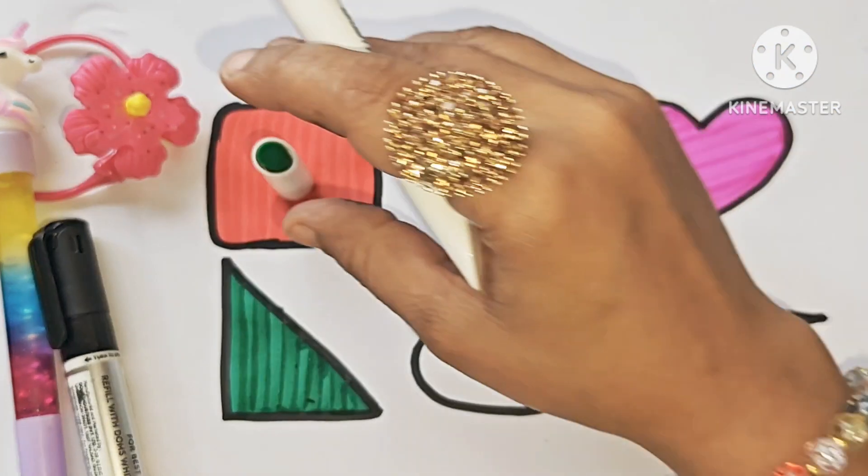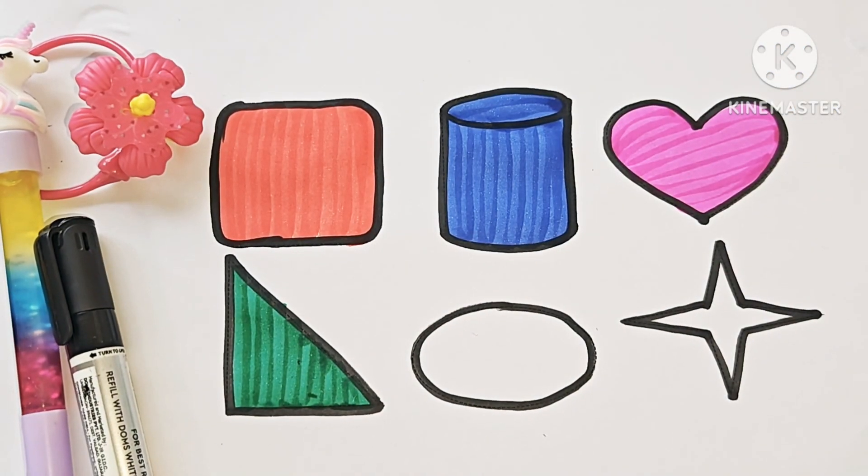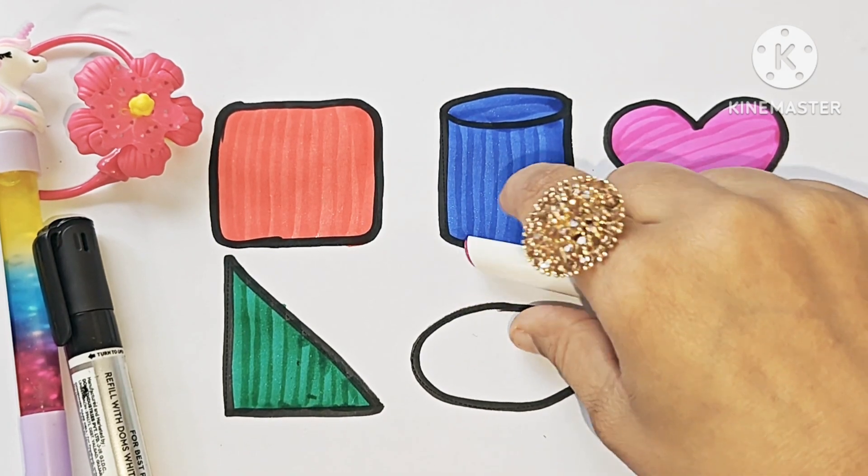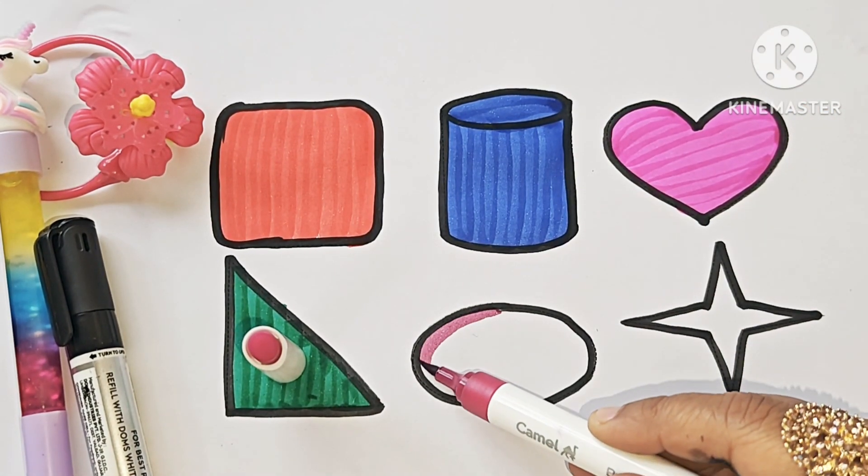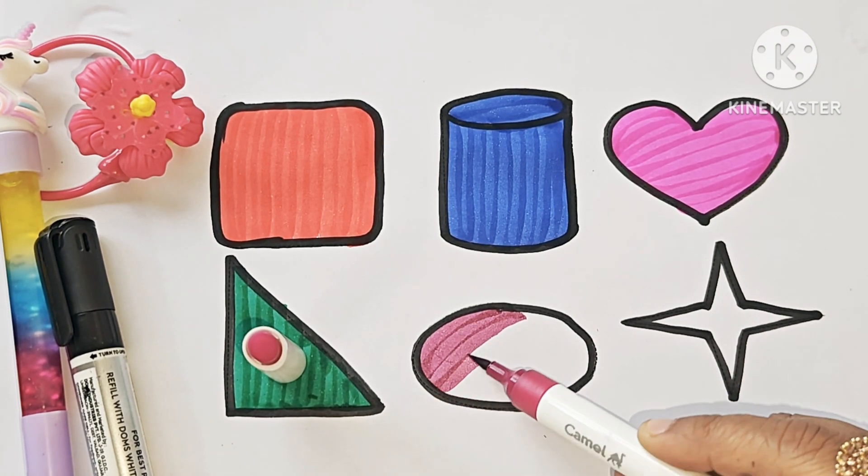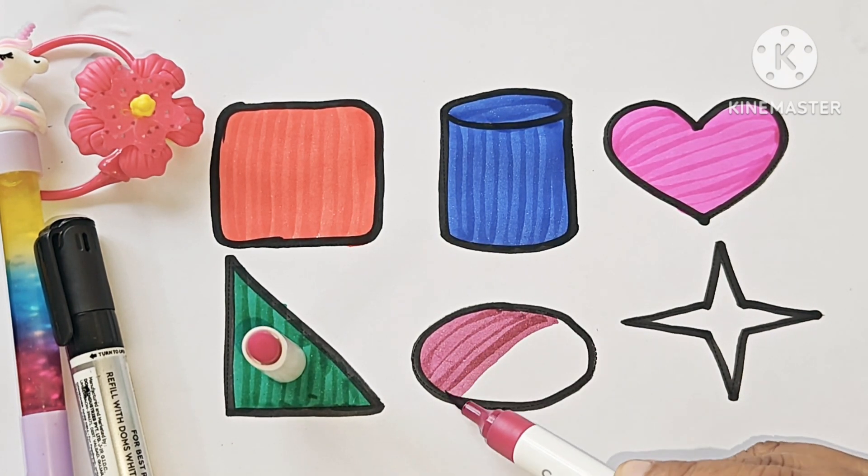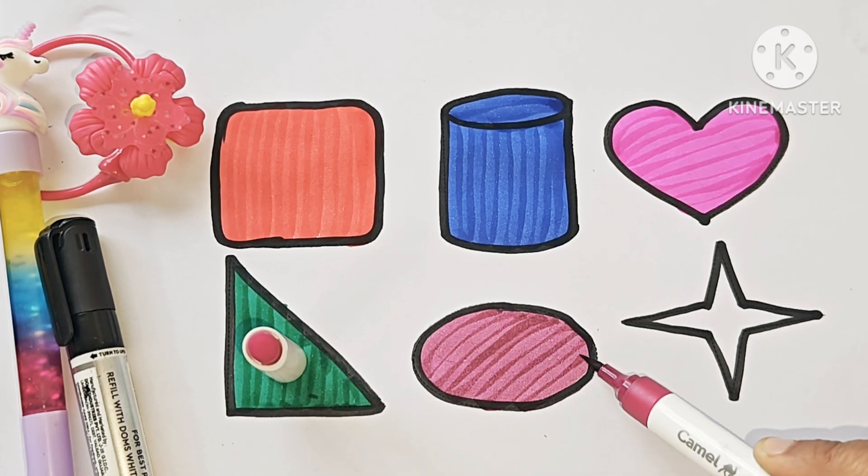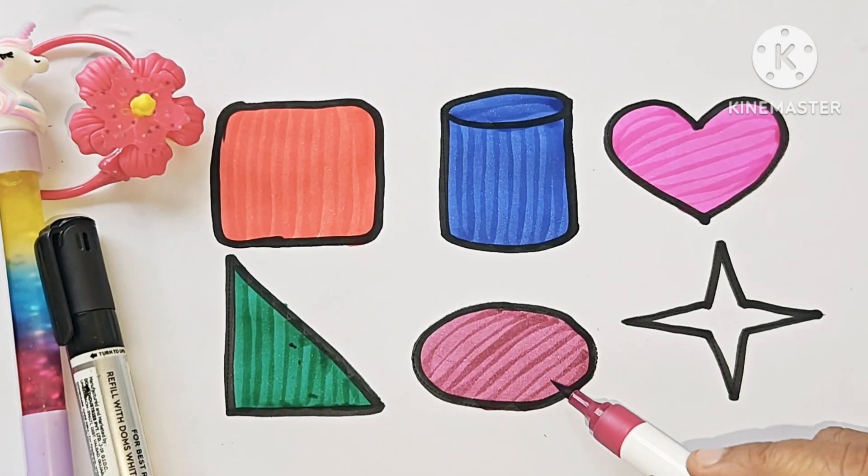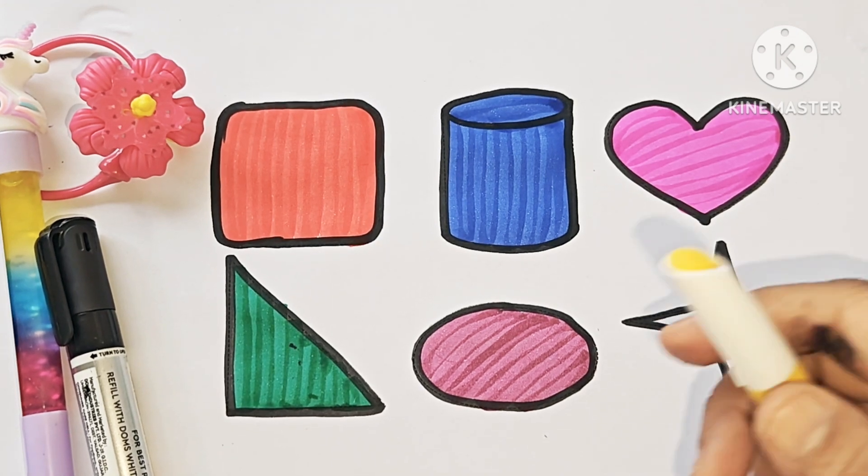This is a right angle triangle. Violet color. This is oval. Yellow color.